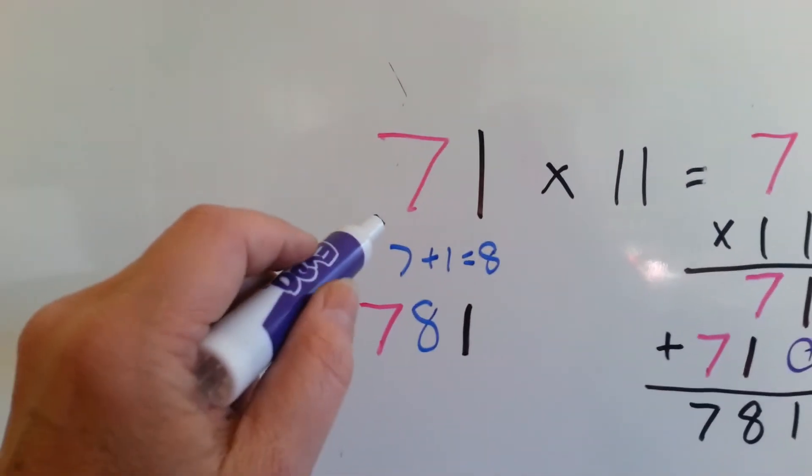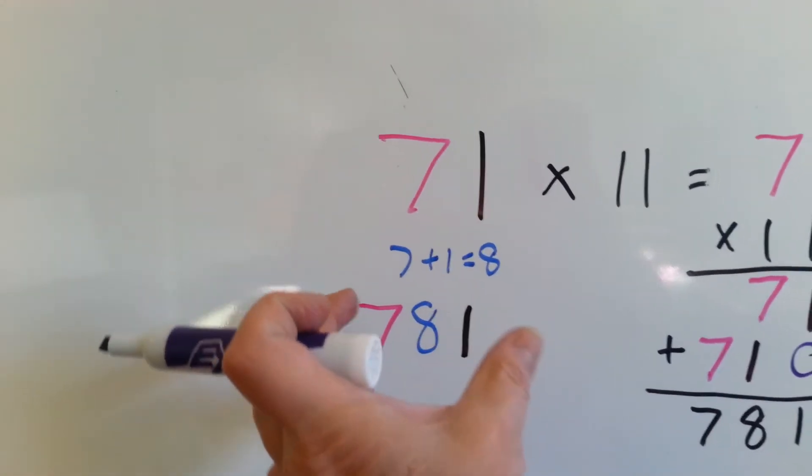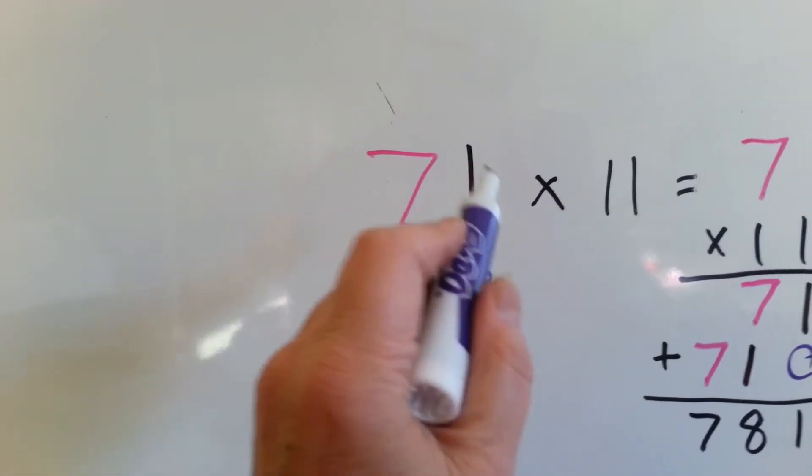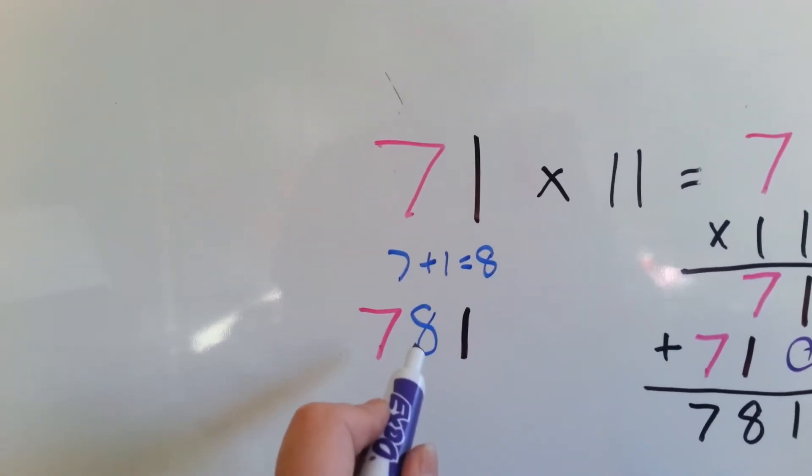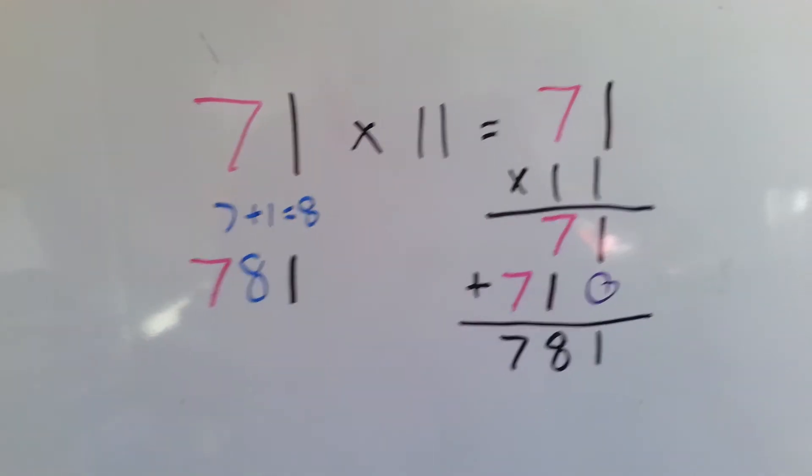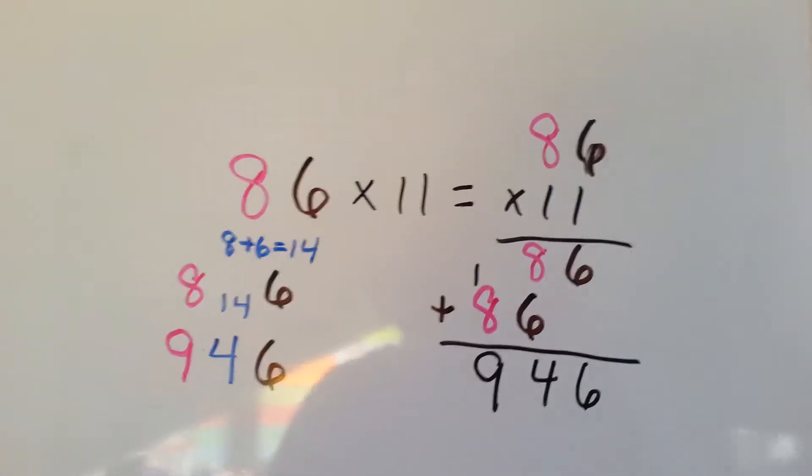Let's try it the tricky way. We'll open our 7 and our 1 up, so we have room in the middle, and we add 7 plus 1, which is 8. We put the 8 in the center. Look, 781. We're going to do it a couple more times, and I think you should have it.